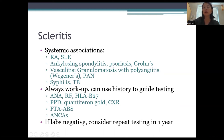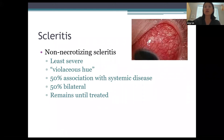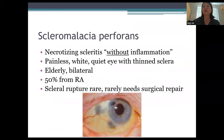Sometimes lab work will be negative — consider repeat testing in that case. Scleritis is typically going to remain until it's treated. Non-necrotizing scleritis is the most common and least severe form, classically showing a very violaceous, bright red hue. There's a 50% association with systemic disease and 50% of cases are bilateral. It will persist until treatment is given.